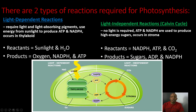Diving deeper into photosynthesis, there are two types of reactions required. First, we have our light-dependent reactions, which require light and light-absorbing pigments in the form of chlorophyll. They use energy from sunlight to produce ATP and NADPH, and they occur in the thylakoid.